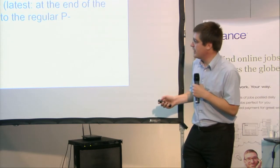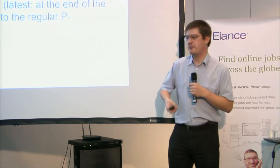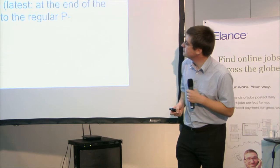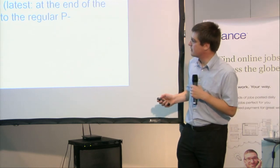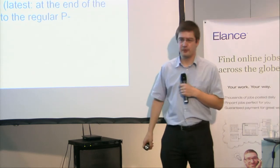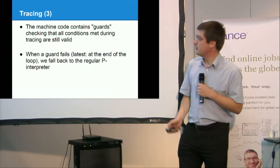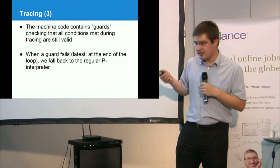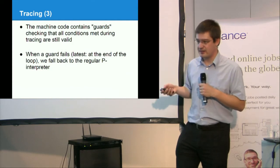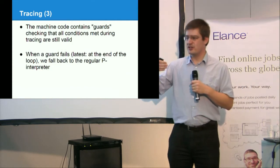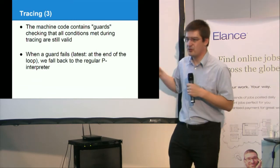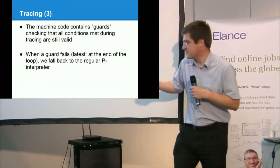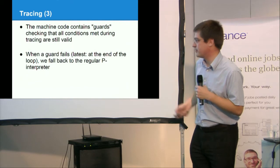And when a guard fails, too bad, you don't have machine code for it. Then we fall back to the regular interpreter. Of course, a guard will always fail. One of them, even in the best case, will fail. That is just the end condition of the loop.